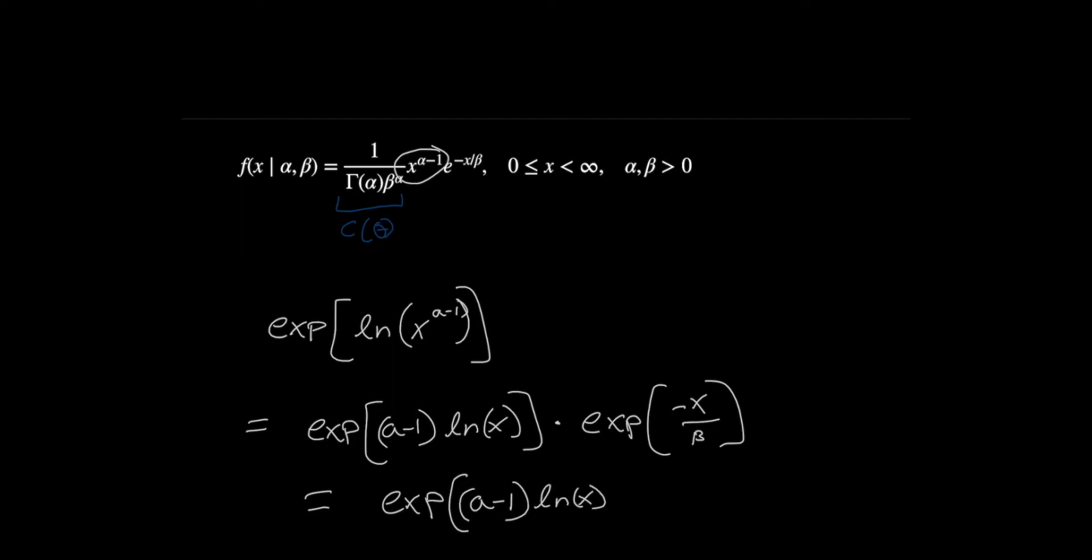Then if we combine that, we're multiplying that with our exponential of minus X over beta. We can just rewrite those two things as the exponential of A minus 1 times log of X minus X over beta. So this is almost in the form that we want. Remember that we want the product of a parameter term and X term, and we want to have a sum of those.